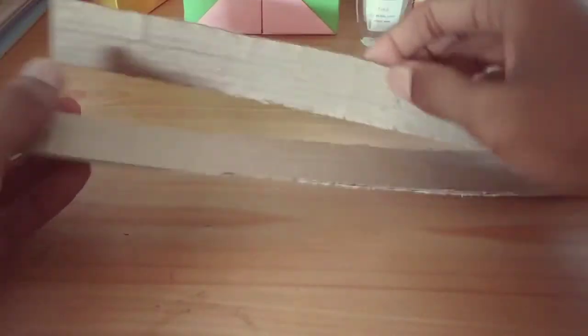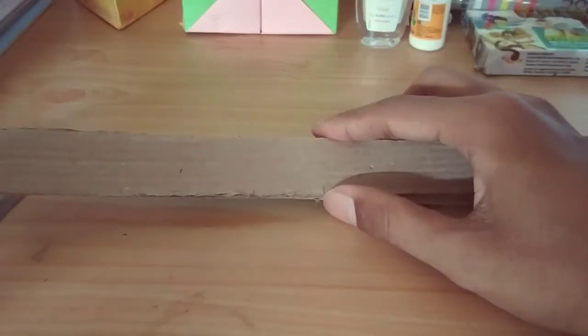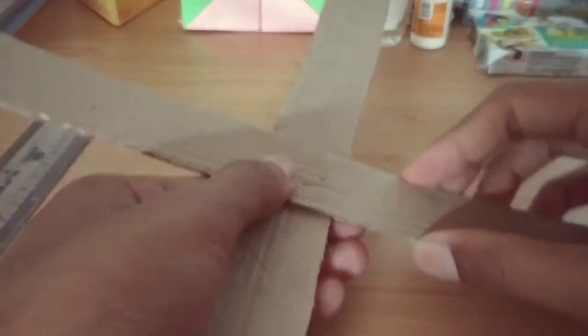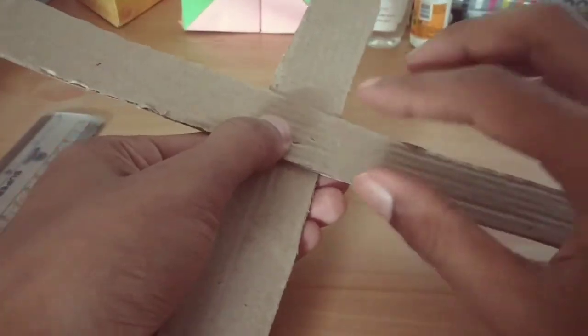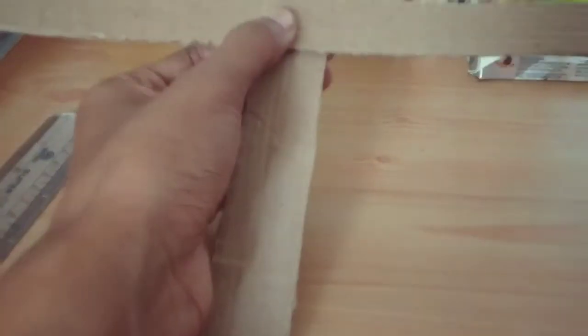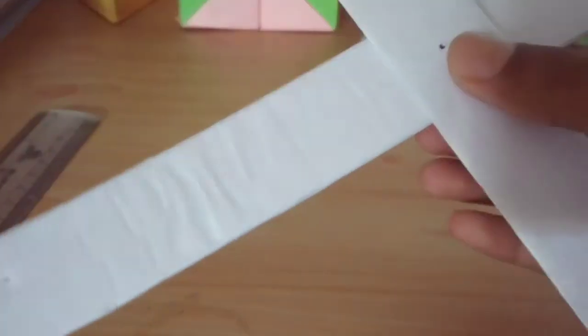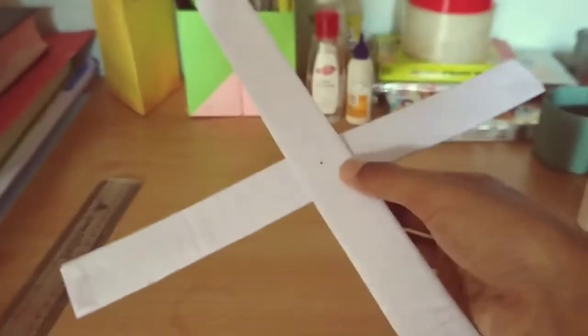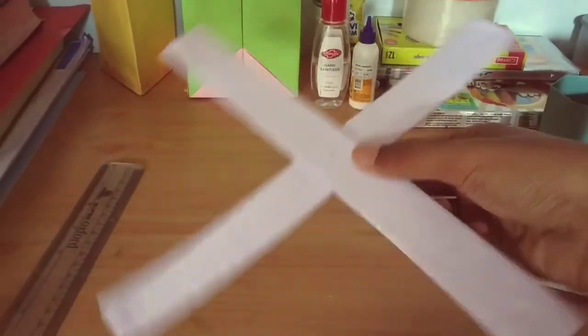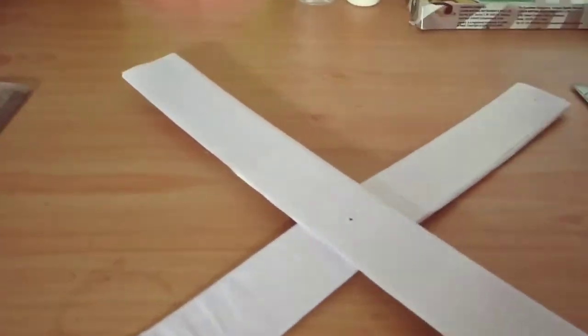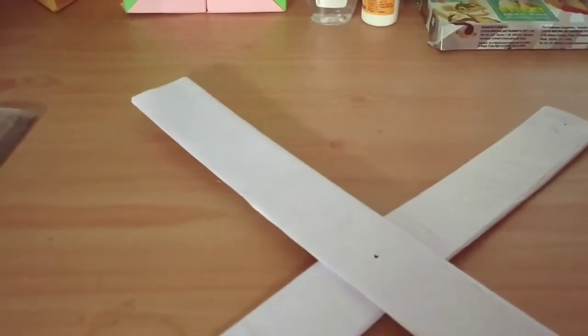And then after wrapping it, with the help of a scale measure the midpoint. Then place one after another like this and stick. Put some glue here and then stick it in this way so that it looks like this, like a helicopter. Now this is ready. My paper cups are also ready. So now let's begin the next step.